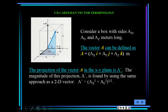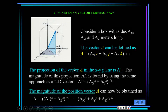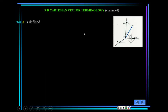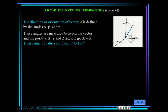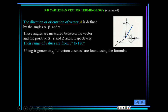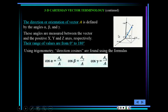Now we have direction orientation via cosine director angles alpha, beta, and gamma — the angles measured with respect to the x, y, and z axes respectively. The ranges go between 0 and 180. These are called direction cosines. Cosine alpha equals the component in x divided by the magnitude; cosine beta equals the component in y divided by the magnitude; cosine gamma equals the component in z divided by the magnitude.